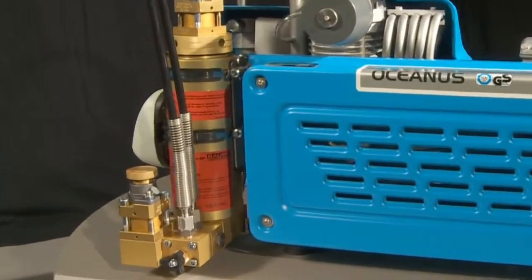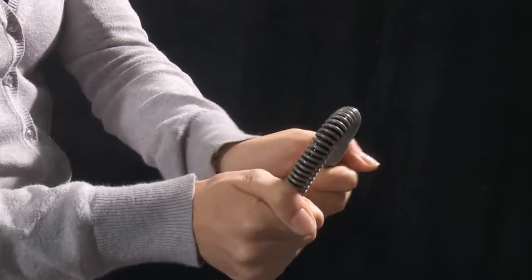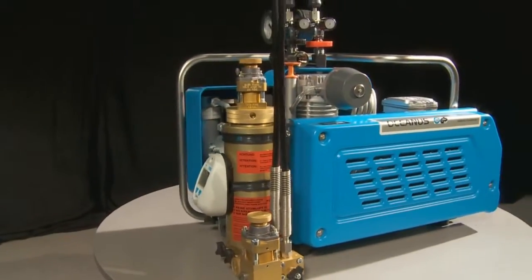Filling hoses with integrated kink protection and food grade PET inner layer ensure that the high pressure breathing air cylinders can be filled safely.